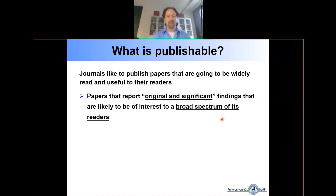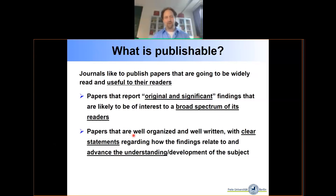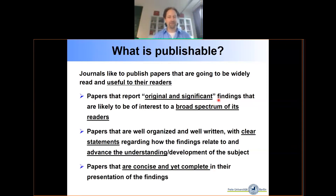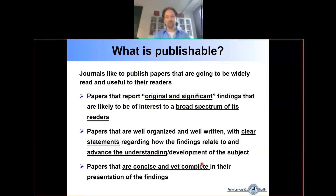Journals and readers want original and significant findings that cover a broad spectrum of readers. That's how your research gets cited — a broad audience thinks it's valuable and builds on your work. You also want a well-written paper with clear statements that's easy to follow, so after reading it, someone says 'I've learned something new.' Papers should also be concise yet complete — you don't want 50 pages, but the art is to include everything that matters.